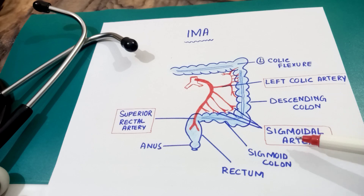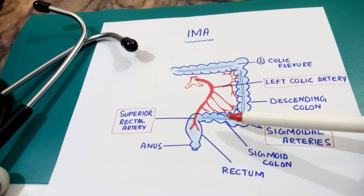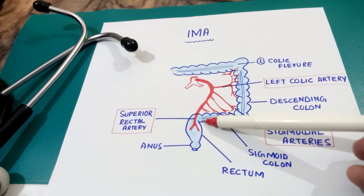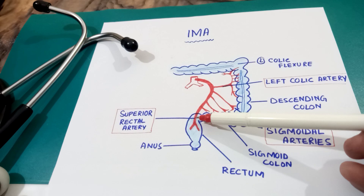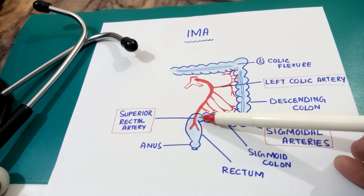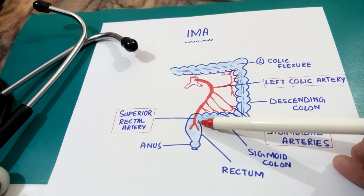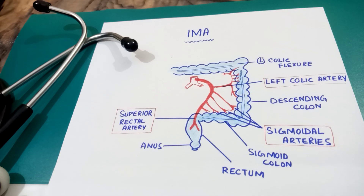The second branches are the sigmoidal arteries, which are two to three in number and supply the sigmoid colon. The third branch is the superior rectal artery, which supplies the rectum and the upper half of the anus. So there are three branches of the inferior mesenteric artery: the left colic artery, sigmoidal arteries (two to three in number), and the superior rectal artery.